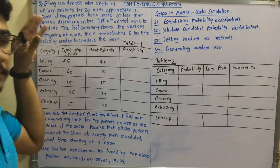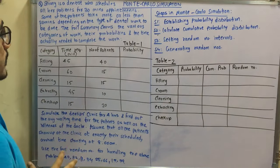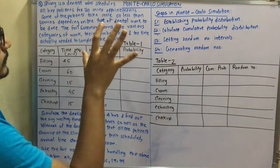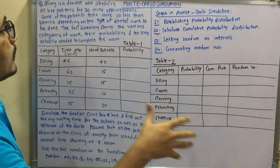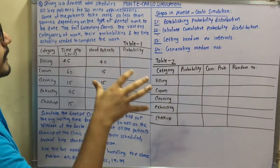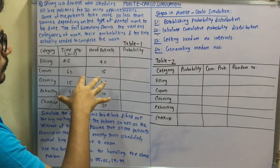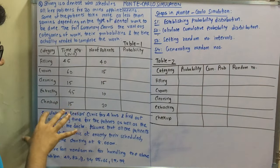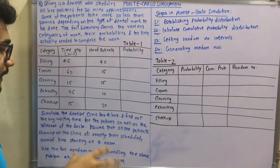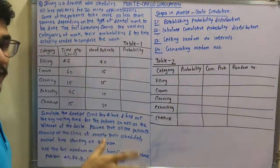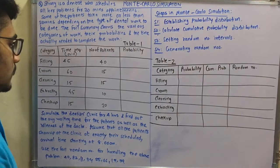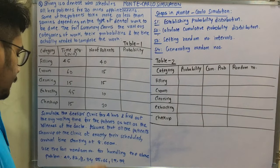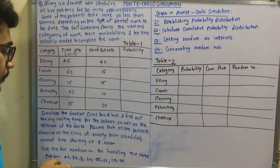Here is the problem: Strong is a dentist who schedules all her patients for 30-minute appointments. Some patients take more or less than 30 minutes depending on the type of dental work to be done. We have to simulate the dentist clinic for 4 hours, find the average waiting time for patients, and the idleness of the doctor. All patients show up at exactly their scheduled arrival time, starting at 8 AM.